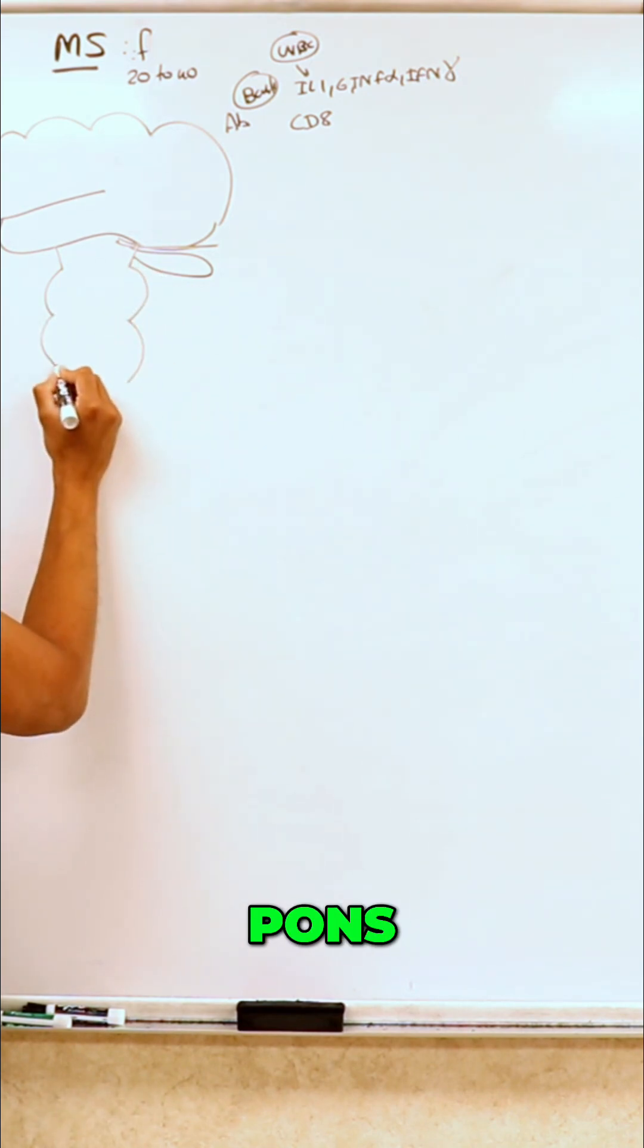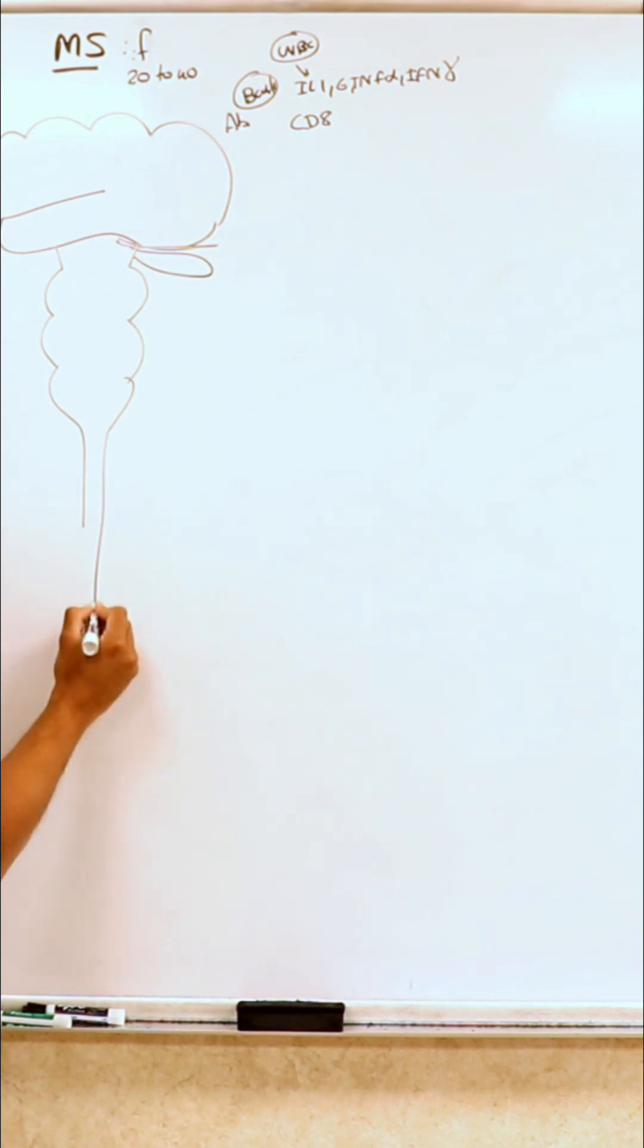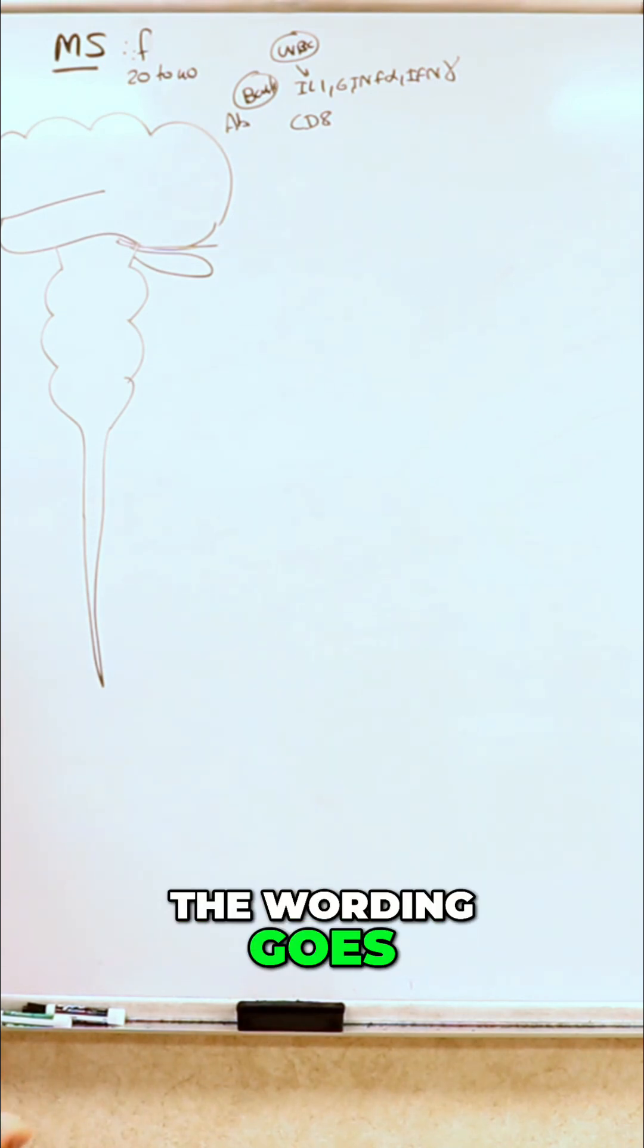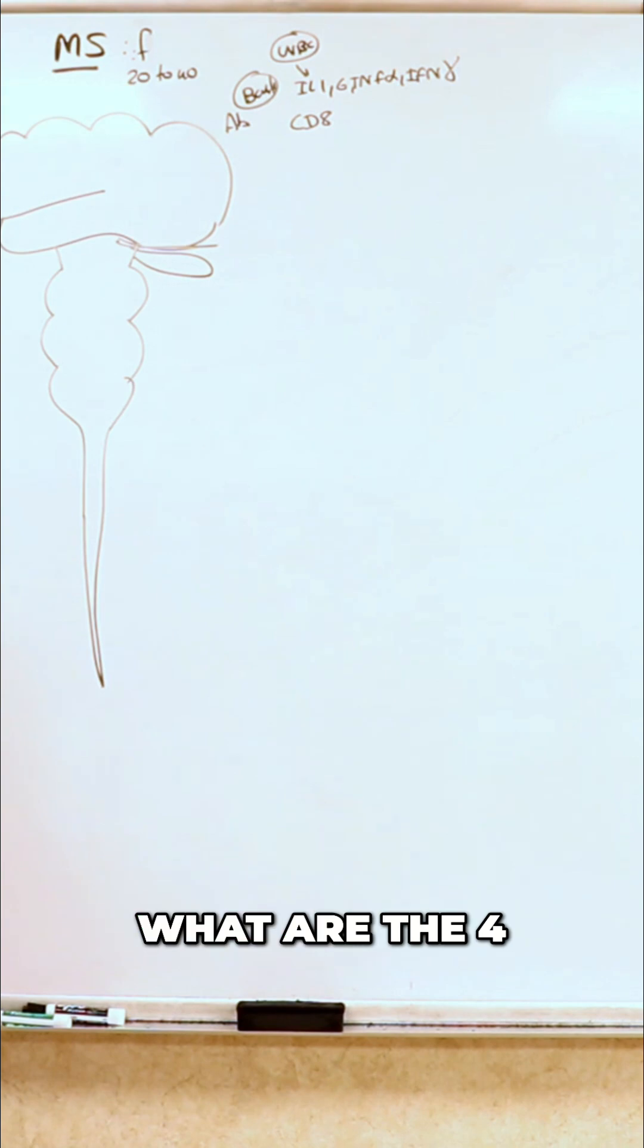Midbrain, pons, medulla oblongata, and your spinal cord. Now classically, whenever somebody's got MS, it likes to affect four areas. You need to know what are the four areas that MS likes to attack.